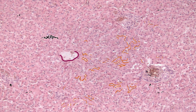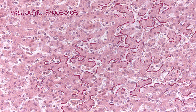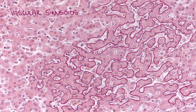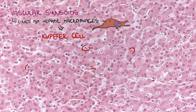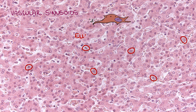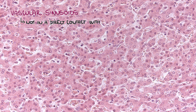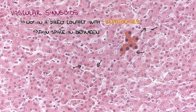There are vascular sinusoids between the plates of hepatocytes. Their endothelial surface is lined by hepatic macrophages called Kupffer cells. Sinusoids are not in direct contact with hepatocytes.